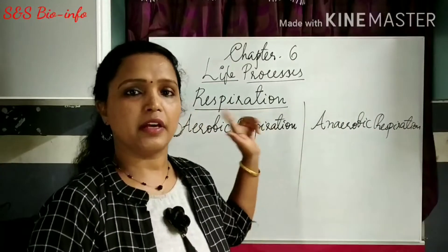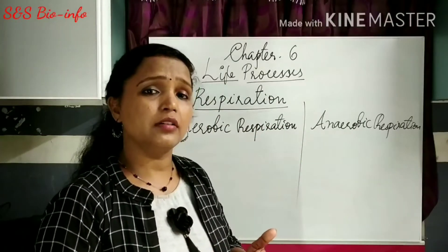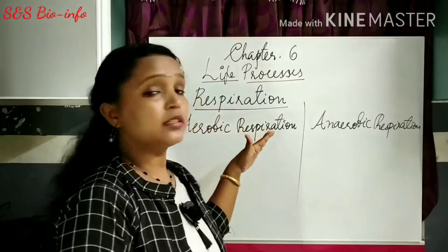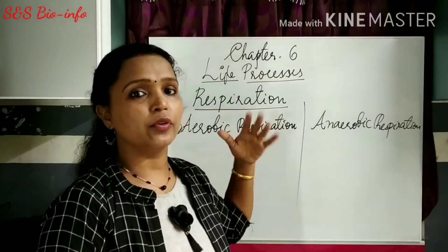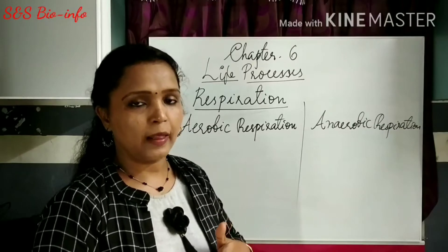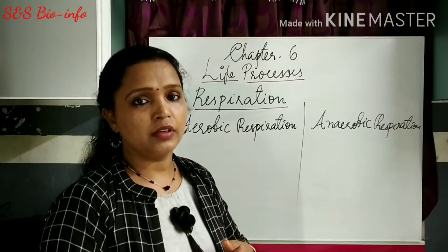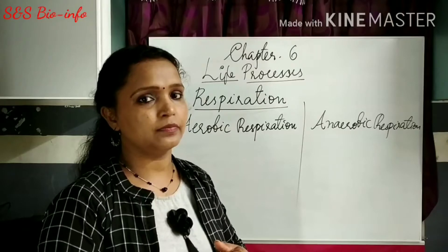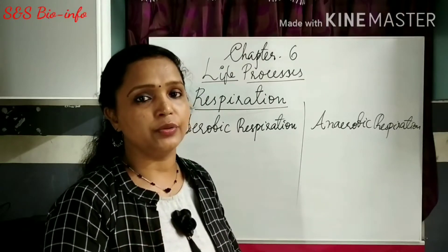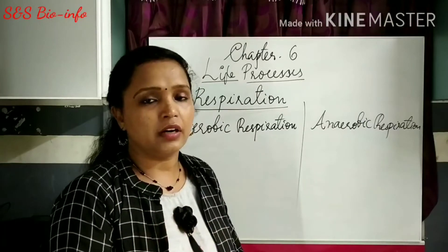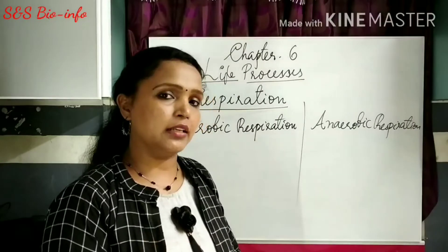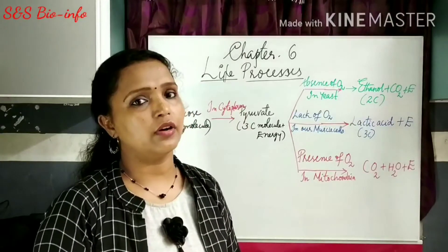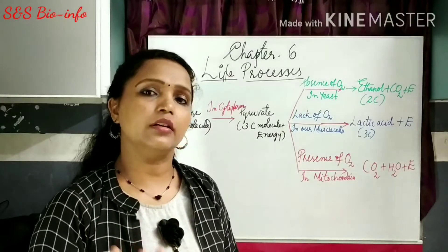So respiration is of two types: aerobic and anaerobic. The purpose of respiration is the releasing of energy, and in both cases the nutrient used is glucose. Glucose is a six-carbon compound which is converted into a three-carbon compound called pyruvate in the cytoplasm. Thereafter, this three-carbon pyruvate is converted into energy and different compounds with or without oxygen.